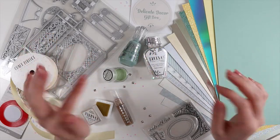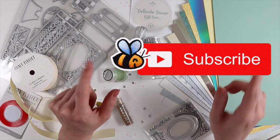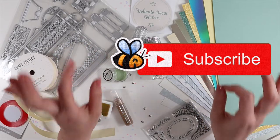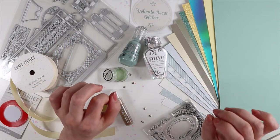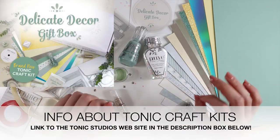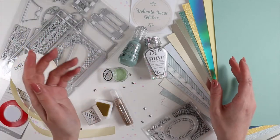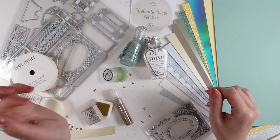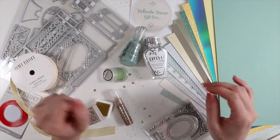As I said in the last video, today we're going to create two cards using heat embossing on acetate with the stamps and the embossing powder of the Tonic Craft Kit 53. Of course, you can replicate the technique with any stamp or any embossing powder that you have in your stash.